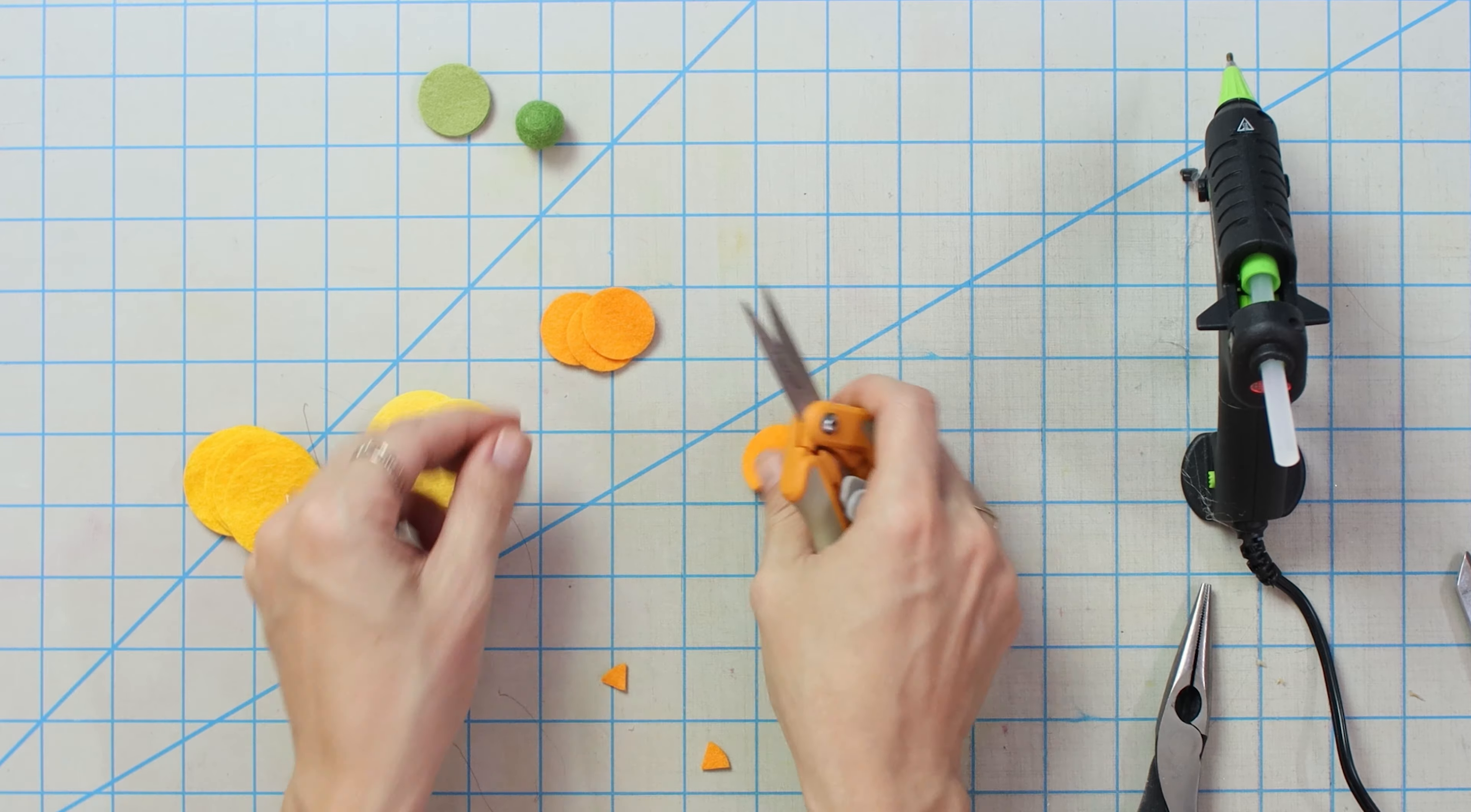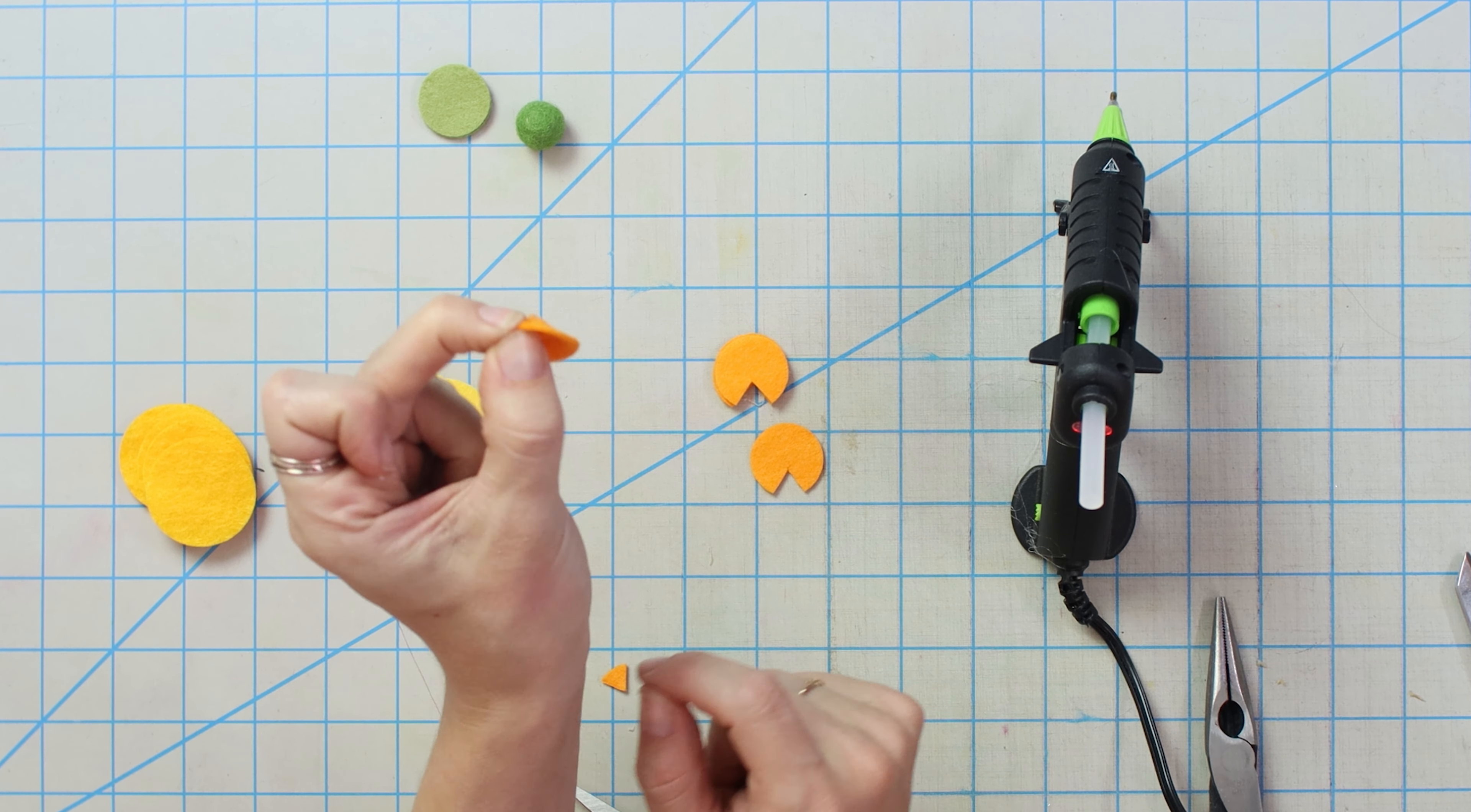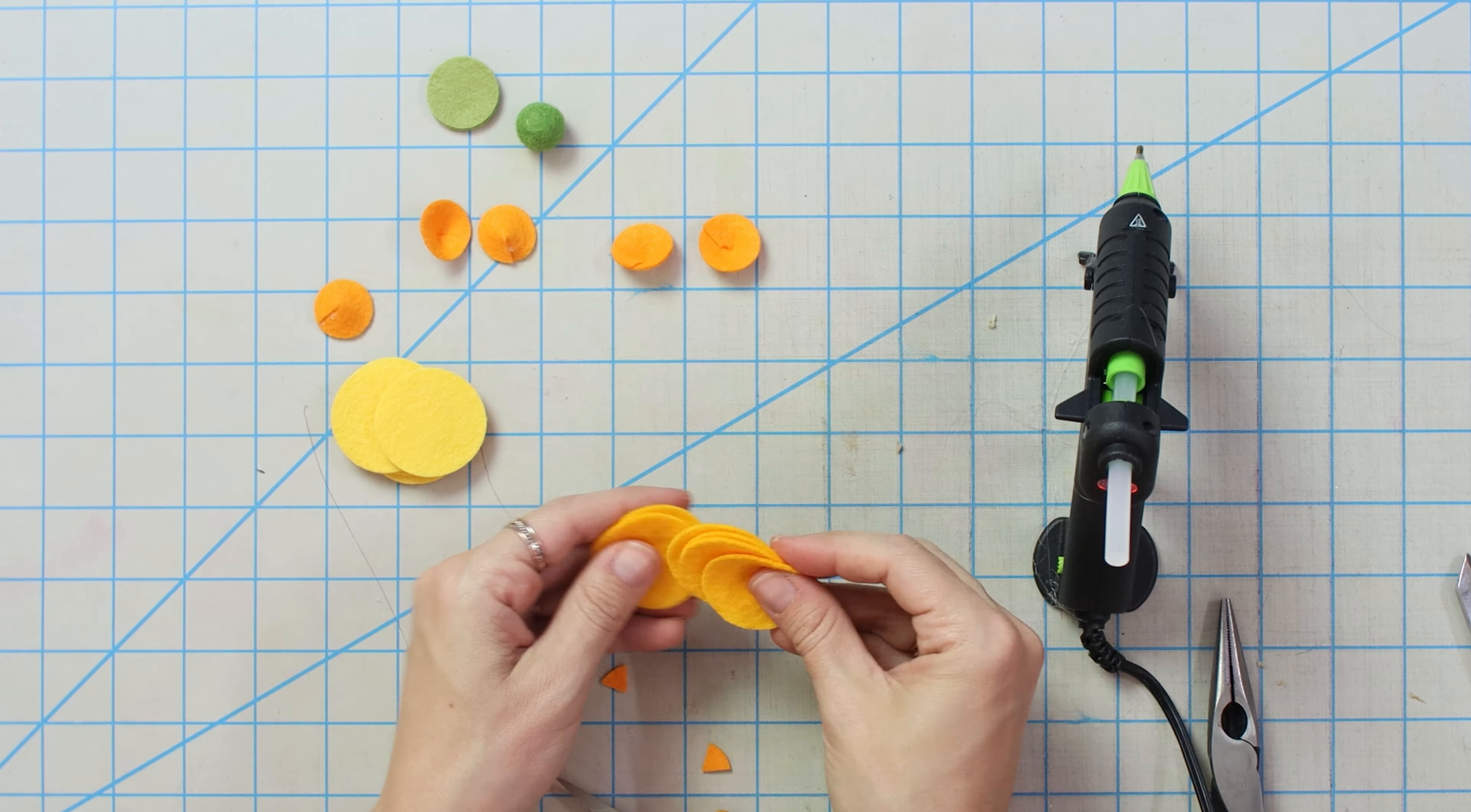So we're going to prep all of our petals first and we're going to do this on our orange, tangerine and sunshine petals, not the green ones, but we're going to take a little bit of a triangle out of each petal and then we'll glue them. We're going to put a little bit of glue on the edge, rotate it over and make this dome shape. And we're going to do the exact same thing on all of our petals, except for the green ones.